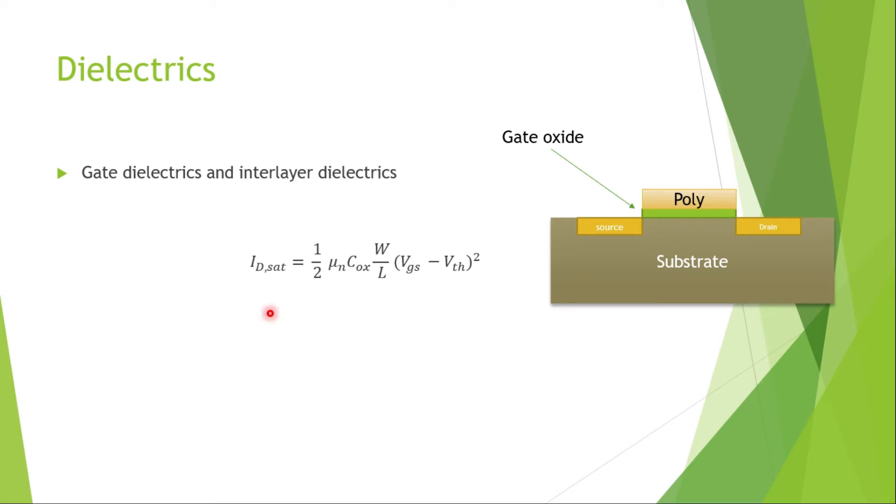The first is gate dielectrics. If you consider the equation of the drain current in saturation of a MOSFET, it will be like half mu n cox W by L times VGS minus VTH whole square, neglecting some conditions and second-order effects like channel length modulation and body effect.